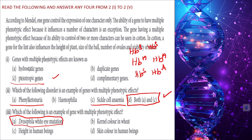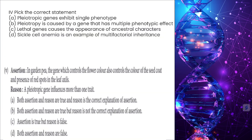Skin color, kernel color, and height in humans are examples of polygenic inheritance, where more than one gene controls a trait. Pick the correct statement: pleiotropy is caused by a gene that has multiple phenotypic effects — one gene showing many characters. That is the correct answer.